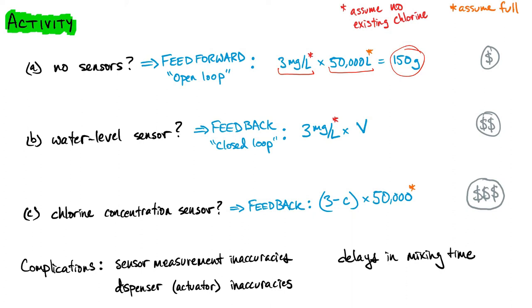Now we'll see two examples of feedback. In the first case, the water level sensor gives us an estimate — instead of assuming 50,000 liters, we can now measure the actual volume, call it V, and multiply that by how much we think we're off. Here we could assume no existing chlorine or make some other best guess. This is our first example of feedback because the sensor is giving us information about the volume and we're using that to inform what our input — the amount of chlorine in grams — should be.